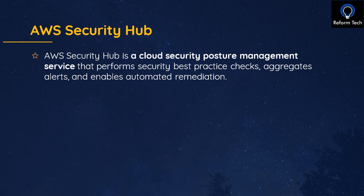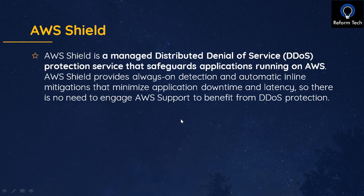Security Hub collects data from all security services across multiple AWS accounts and regions, consolidates it in one place, and makes it easy to view. It essentially acts as a central hub that pulls all security data together.